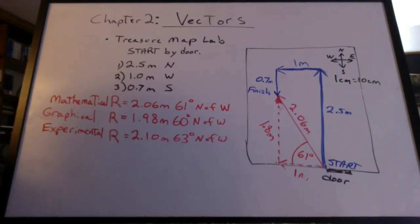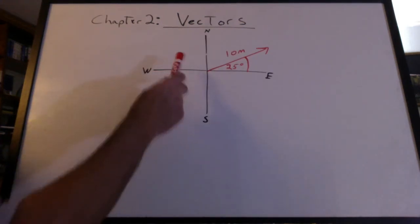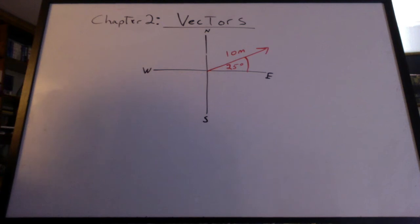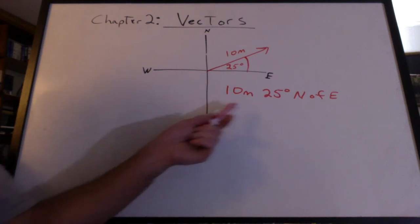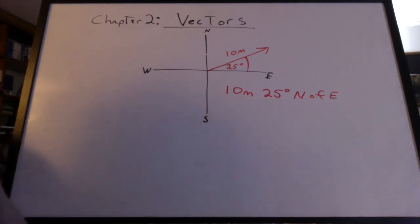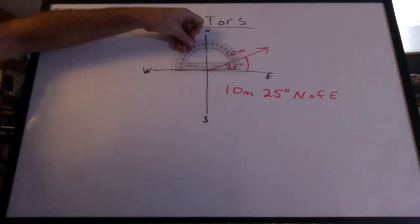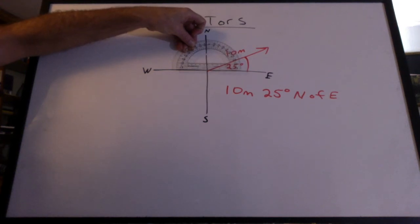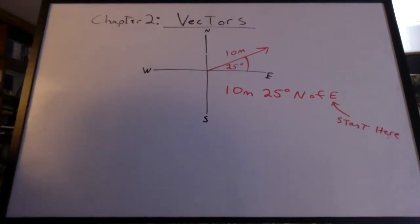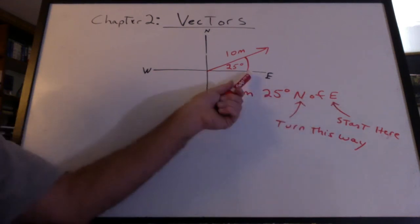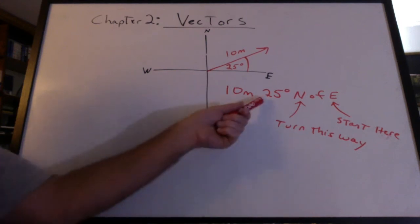Let's talk about how we label these angles. Say we have a vector that's 10 meters long and the angle is measured to be 25 degrees. We could say this vector is 10 meters, 25 degrees north of east. Think about putting your protractor on the paper — we start measuring the angle from the east and then head north. So we're turning north from the east. We start at the east and we're turning to the north.